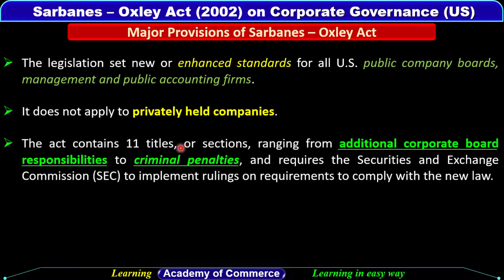The Act contains 11 titles or sections ranging from additional corporate board responsibilities to criminal penalties. Is Act mein 11 titles or sections hain. Inki range mein additional corporate board responsibilities bhi include ki gayi hain aur saath hi criminal penalties bhi include ki gayi hain.